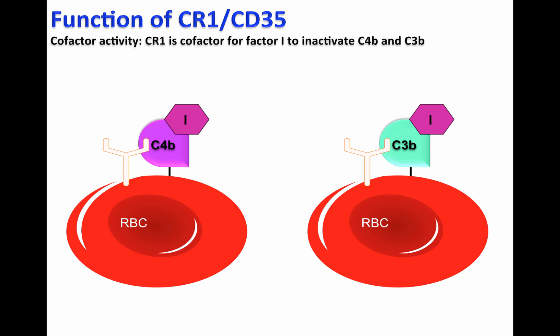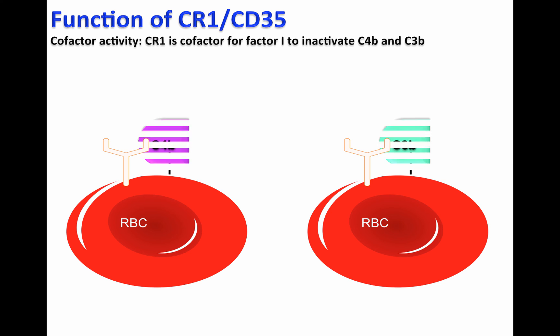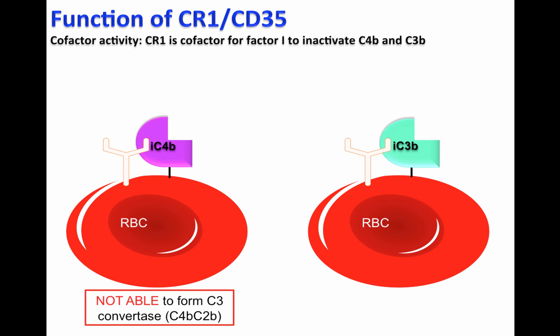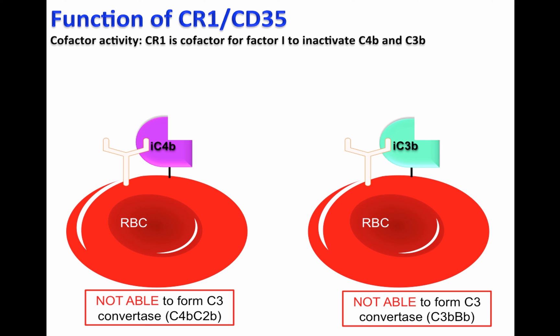Factor I is a protease that will cleave C4b and C3b, generating iC4b or iC3b. iC4b, or inactive C4b, will not be able to form the C3 convertase C4b-C2b, and iC3b, or inactive C3b, will not be able to form the C3 convertase C3b-Bb. Therefore, CR1 plays a fundamental role as a cofactor for factor I to inactivate C4b and C3b.